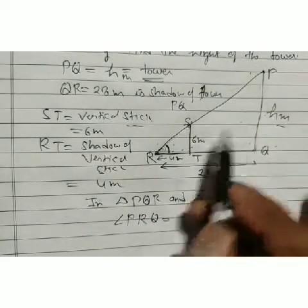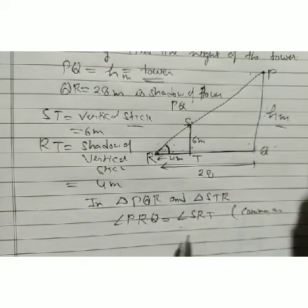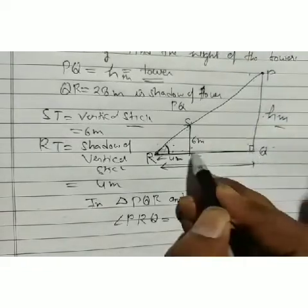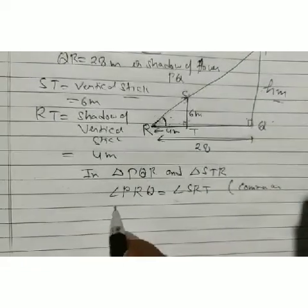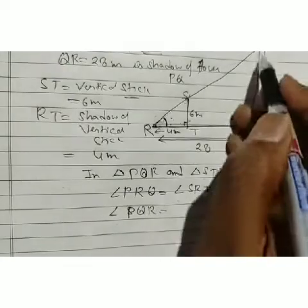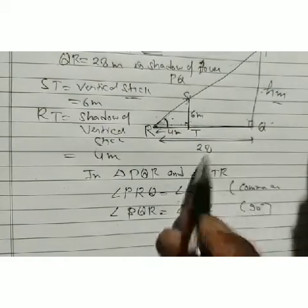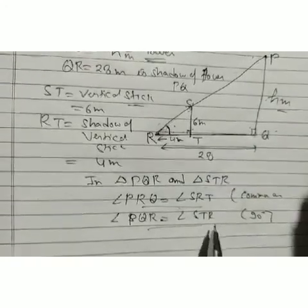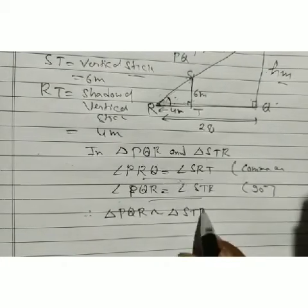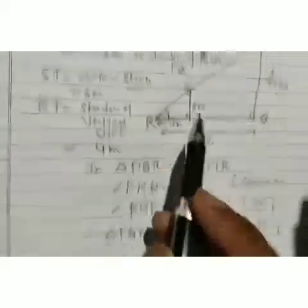By Angle-Angle similarity criteria, triangle PQR is similar to triangle STR. Therefore the corresponding sides are in proportion: PQ/ST = QR/TR.